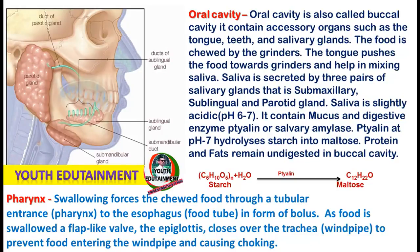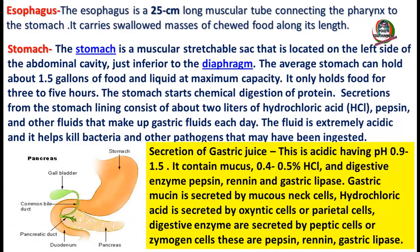The pharynx forces the chewed food through the tubular entrance to the esophagus in the form of a bolus. The esophagus is a 25-centimeter-long muscular tube connecting the pharynx to the stomach.